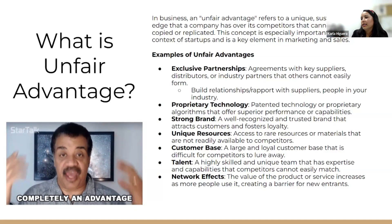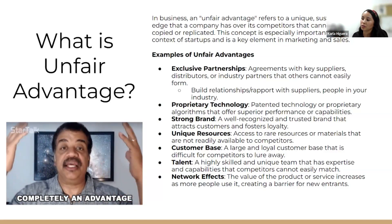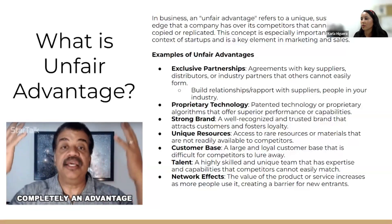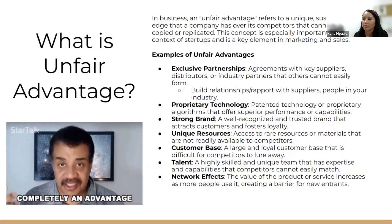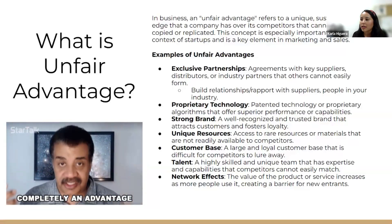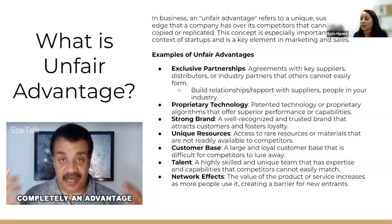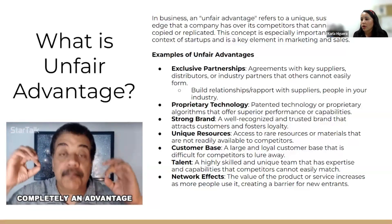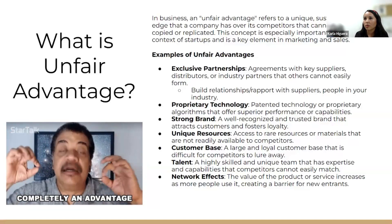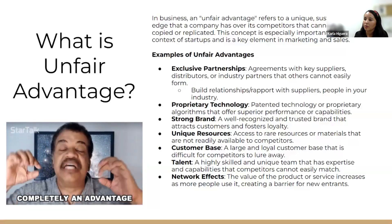Unique resources — access to rare resources and materials not really available to the competition, depending on what you sell. For apparel, maybe you can build a connection with a company that can give you a great deal on cotton blend at a discounted price, building that relationship directly with them. Or if you're getting products from online sources like Alibaba, build the best relationships you can.